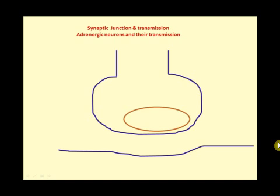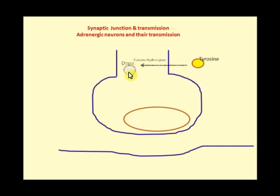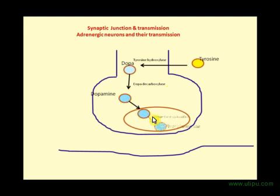Now, adrenergic neurons and their transmission. Tyrosine enters the axon and is converted to DOPA via tyrosine hydroxylase — the rate-limiting enzyme. DOPA is then converted to dopamine via dopa decarboxylase. The dopamine goes into the vesicles, where it is converted to norepinephrine via dopamine beta-hydroxylase. Norepinephrine is then released, travels the cleft, and works on its receptors.